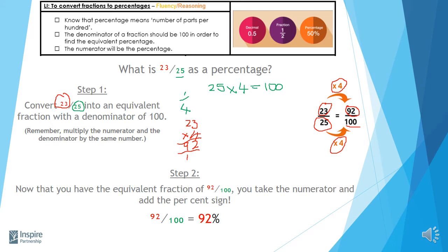Step 2 is now just a case of using my numerator, in this instance 92, and putting it in front of the percentage sign, because remember that percent means out of 100. So 92 percent.